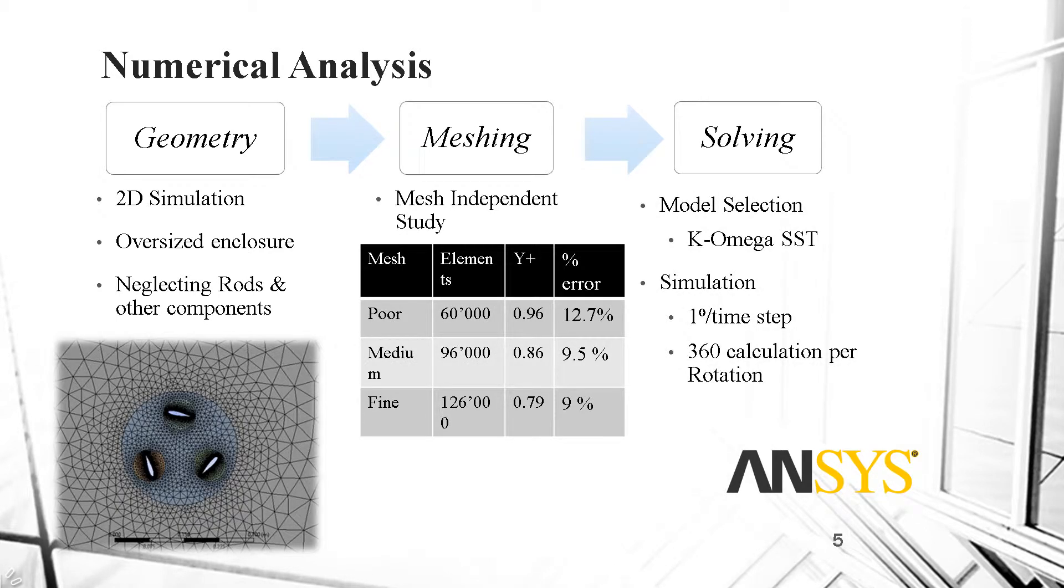It is, with no doubt, inconvenient to build the actual design every time we want to test a new design. This is why our analysis has been done on ANSYS. The turbine was drawn as a 2D geometry since 3D is more time consuming. An oversized enclosure of the blades has been implemented since in real life there's no effect of any walls when the turbine is put in open areas. And rods and other components were neglected for more simplicity.